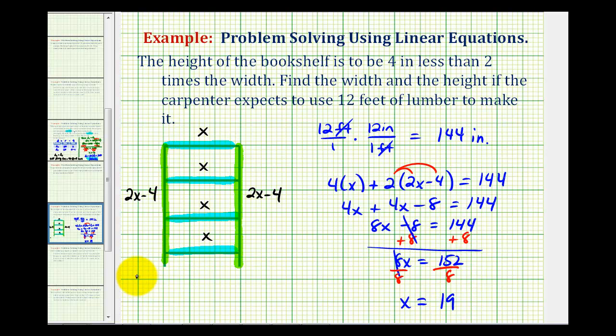Which means the width of the bookcase is 19 inches. And the height, which is 2x minus 4 or 2 times 19 minus 4. That would be 38 minus 4 or 34 inches for the height.